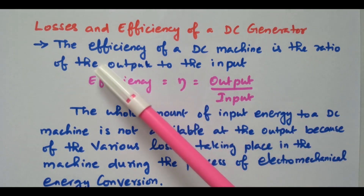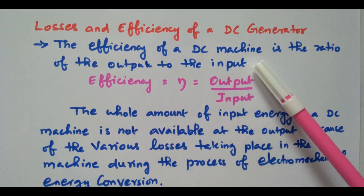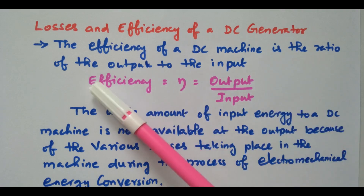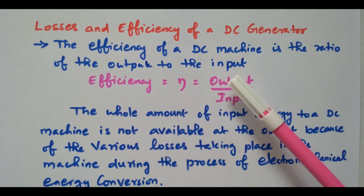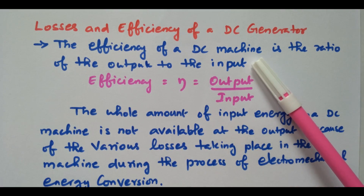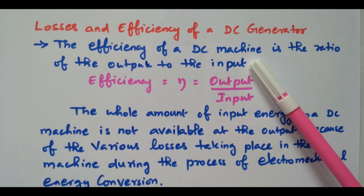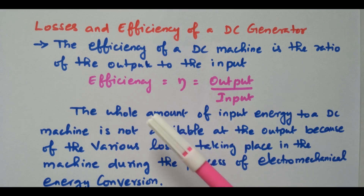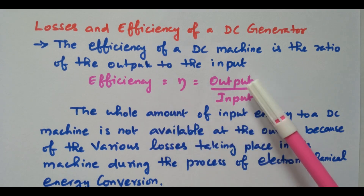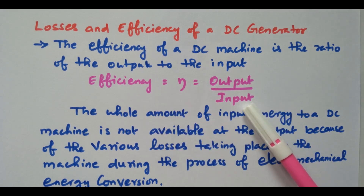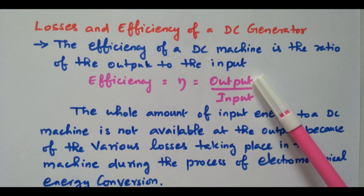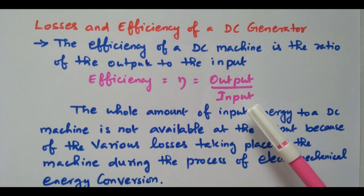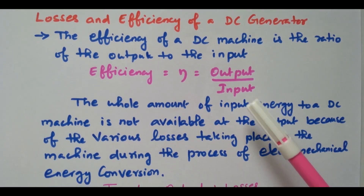First, we will see the efficiency. The efficiency of a DC machine is the ratio of the output to the input. The DC machine can act as either a generator or a motor — both are the same, and there is no difference construction-wise. The efficiency is output power divided by input power — the ratio of what power we are getting to what power is given to the machine.